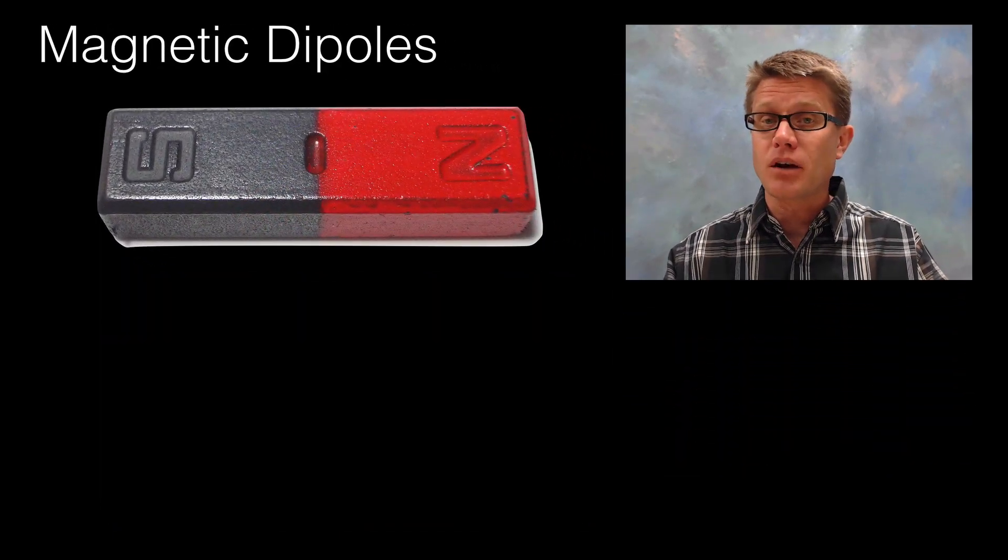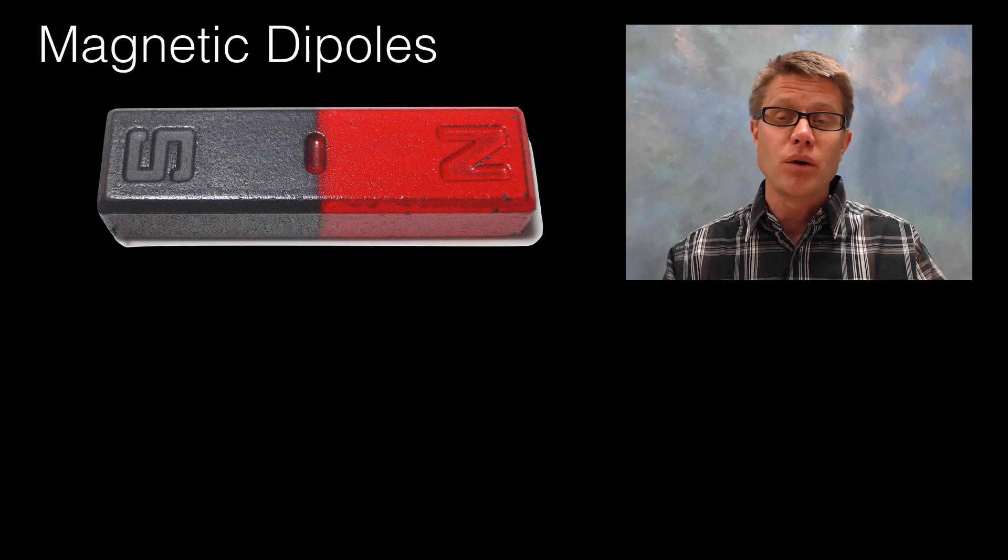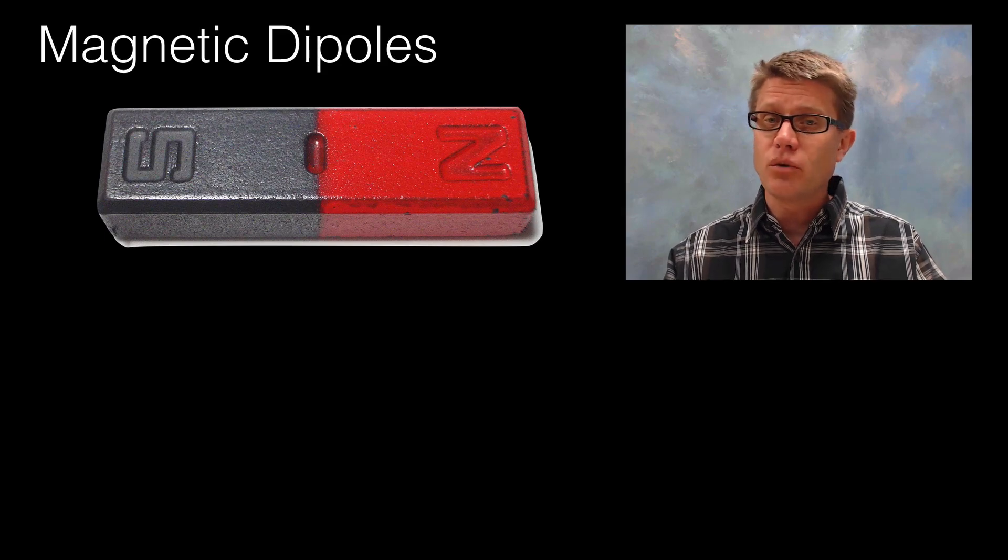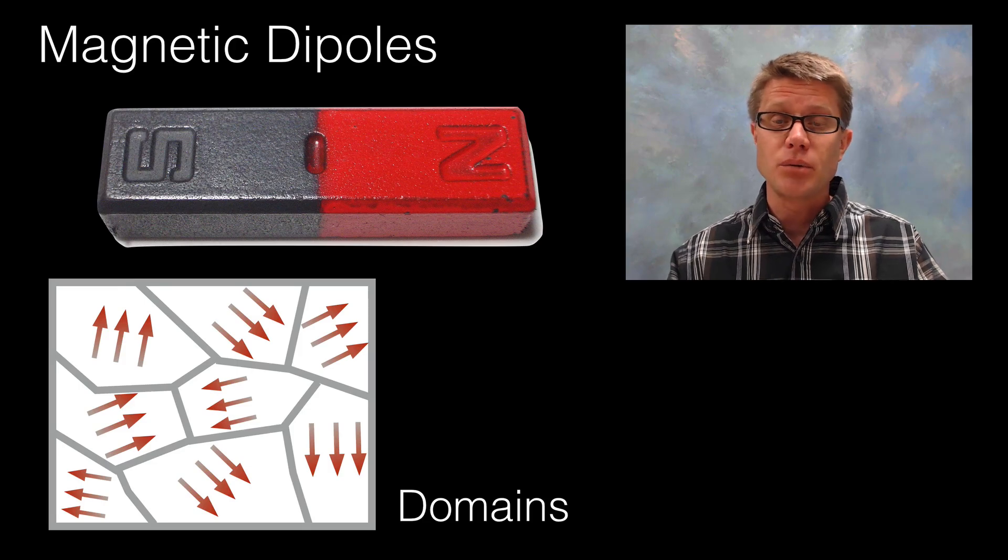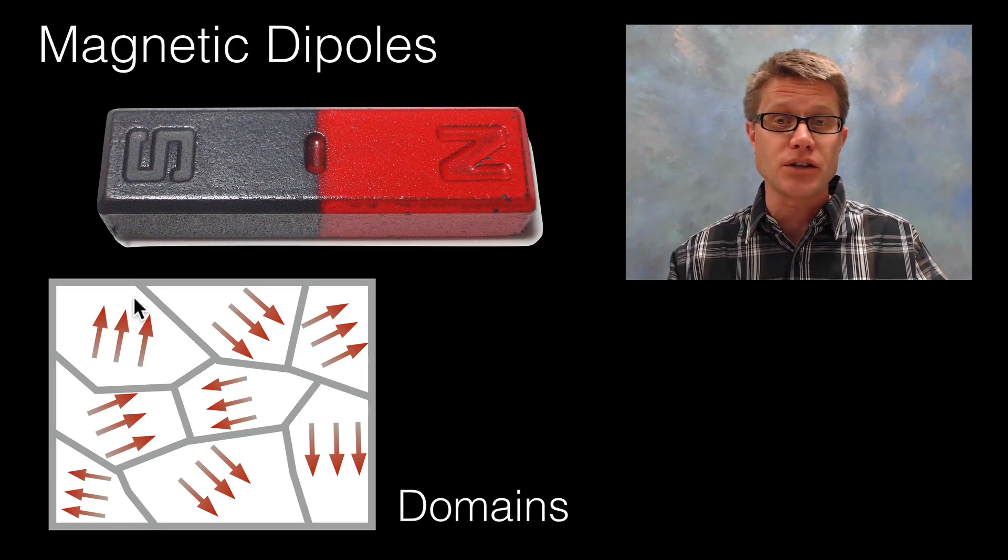If we were to look at a bar magnet like this, it has a north and a south side. But what really is creating it are these domains inside the magnet itself. So iron for example that is not magnetized, what we would find is inside those domains the dipoles are there but they are facing in every other direction.